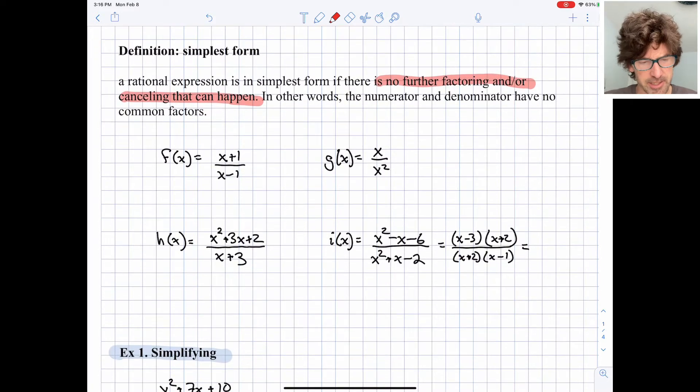So let's look at a couple examples before we actually go on and solve some examples. f(x) equals x plus 1 over x minus 1. It's a common algebraic mistake to think you can just cancel the x's. You cannot do that, so there are no common factors between the numerator and denominator. So this one is in simplest form.